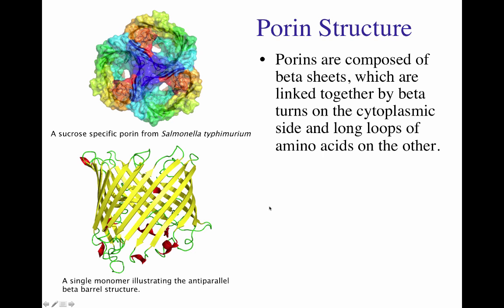Here is the three-dimensional structure of a porin, shown as both a space-fill model and a ribbon model. This is a sucrose-specific porin from Salmonella typhimurium. It is composed of three beta barrels arranged together as a triplet. Looking from the top of the beta barrel set, we can see the opening where sucrose is able to go through. In the lower image, we have the structure of a single beta barrel monomer. The beta sheets of this beta barrel move anti-parallel — one sheet goes up, then a loop allows the next sheet to move down, and so on.